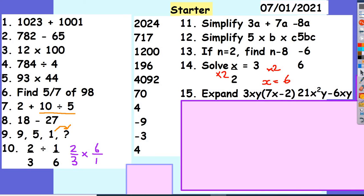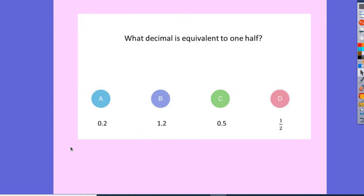Let's head into today's lesson. We're going to have a go at the diagnostic quiz — A, B, C and D. Please note down your answers in your rough books as we go along, and then we'll go through the answers at the end. At any point, you're welcome to pause the video if you need a little bit more time to think. Question 1: which decimal is equivalent to one half?